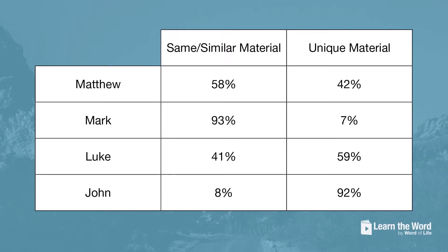As you'll see in this chart, 58% of the contents found in the Gospel of Matthew are found in one of the other four Gospels, and only 42% is unique to the Gospel of Matthew. In our last class, we looked at the Gospel of Mark, which has 93% similar or the same material found in the other Gospels, leaving only 7% unique to the Gospel of Mark. Now, 41% of the contents found in the Gospel of Luke is the same or similar to the other Gospels, while 59% is unique to it. We will highlight some of those unique components in this video.